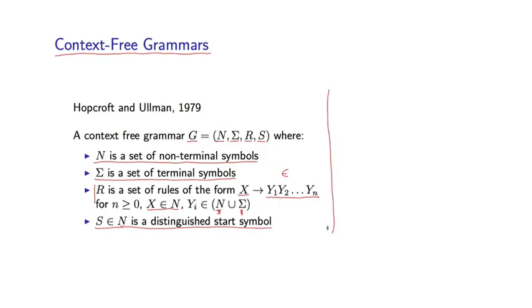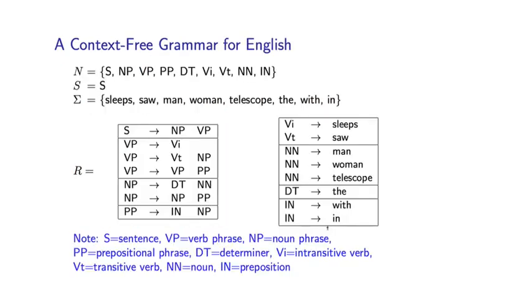That's a very abstract definition. Let me give you a concrete example. Here is an extremely simple grammar for English, but it's useful in illustrating the definition that I just showed you. I have the four elements of the context-free grammar here: N, S, sigma, and R.